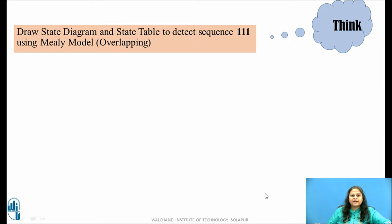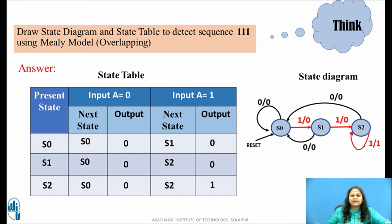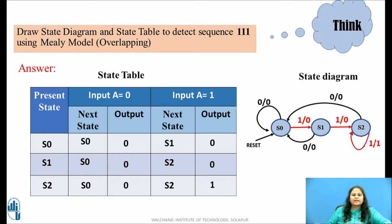Using the method explained, try to draw the state diagram and state table to detect the sequence 1, 1, 1 using Mealy model for the overlapping type. This is the state diagram and state table obtained for the sequence 111. The number of bits is 3, so the number of states required is also 3. Here the middle bit 1 is acting as an overlapping bit, so from there the bit starts for the next sequence — there are 2 bits of overlapping.